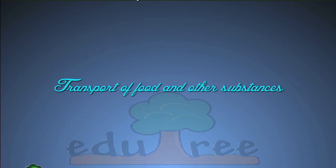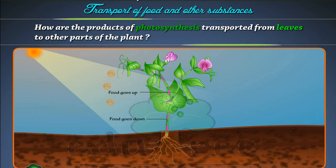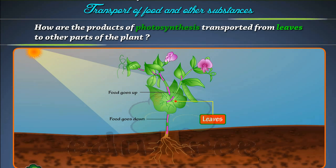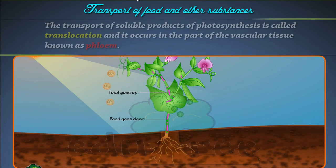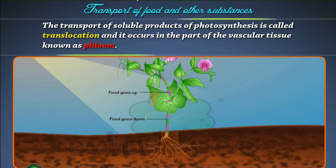Transport of food and other substances: How are the products of photosynthesis transported from leaves to other parts of the plant? The transport of soluble products of photosynthesis is called translocation, and it occurs in the part of the vascular